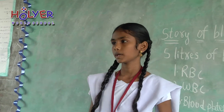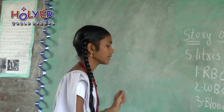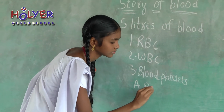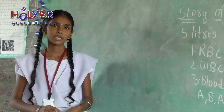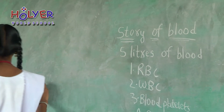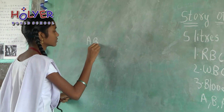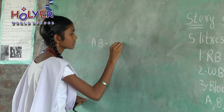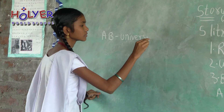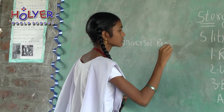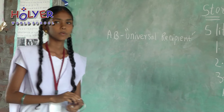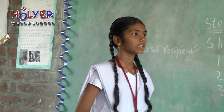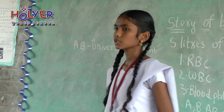Blood groups are divided into 4 major groups: A, B, AB, and O. AB group human beings can receive blood from any other group. O group human beings can donate blood to any other group, so they are called universal donors.